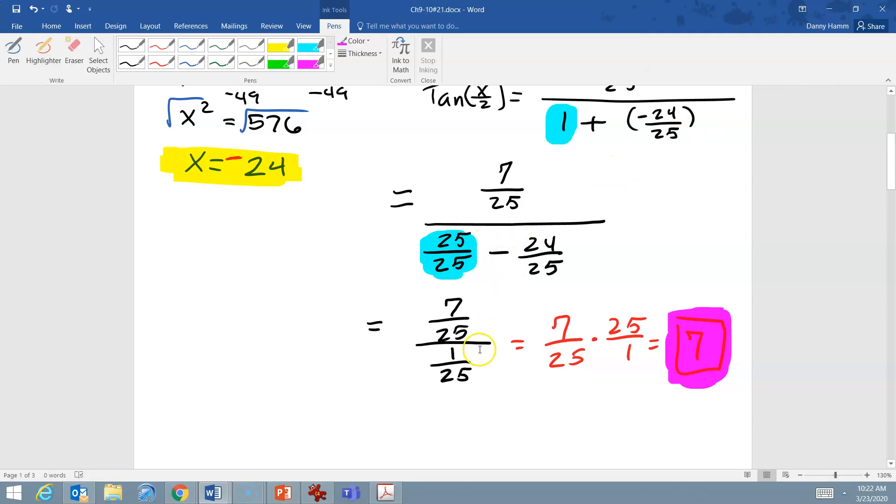And then we add those, and we get 1 over 25. When we're dividing by a fraction, we must multiply by its reciprocal.